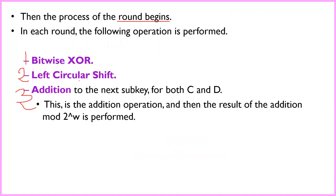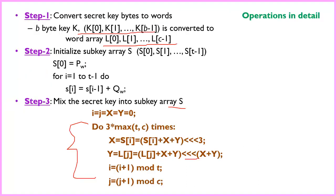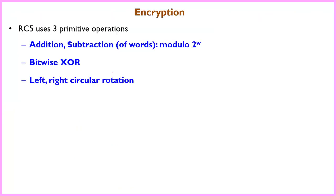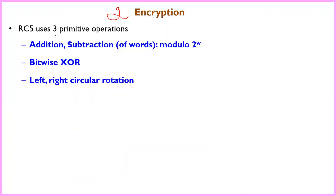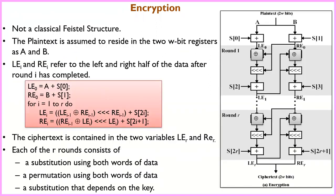All operations used are: bitwise XOR, left circular shift, and addition. This is the process carried out to generate sub-keys. After key expansion, the next main process is encryption. The encryption process uses basic operations like addition, subtraction, bitwise XOR, and left and right circular rotation.